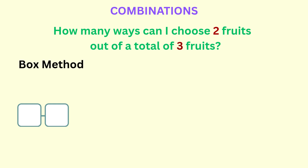In the box method, we list out the total number of objects we are to choose from — in this case, three items: apple, banana, and pear. We are choosing only two of the items, so we put only two boxes. How many choices do we have for the first box? Any of the three fruits can be placed in the first box, so we put down three. Once a fruit is placed into the first box, how many choices do we have for the second box? That's two choices, since one of the three fruits would have already been placed in the first box, so we write two.